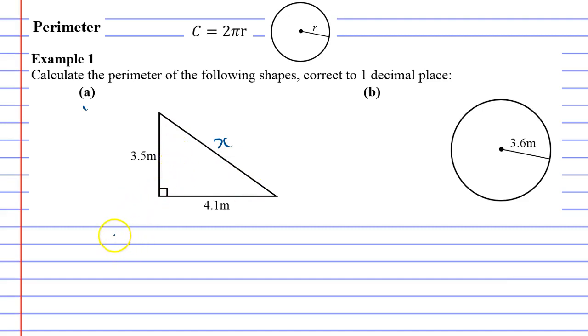Hopefully some of you will realize that this is just Pythagorean theorem using the formula c squared equals a squared plus b squared, c being your hypotenuse or x and a and b being your two other sides. So we'll have x squared equals 3.5 squared plus 4.1 squared.